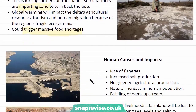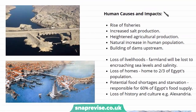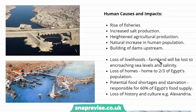Now we're going to look at some of the human causes and impacts of the climate change causing sea level rise on this coastline. Some of the human causes include the rise of fisheries, increased salt production in the region, heightened agricultural production using more fresh water which is causing saltwater incursions, and natural increases in human population putting pressure on the land. It's also being influenced by the building of dams upstream, such as the High Aswan Dam, which is reducing the amount of sediment reaching the Delta.